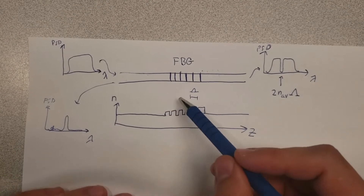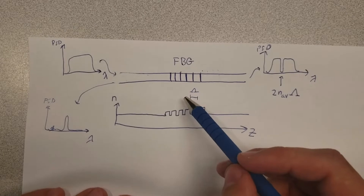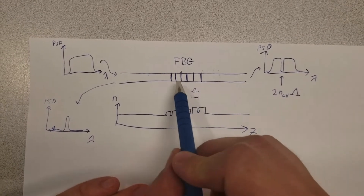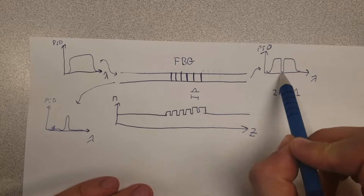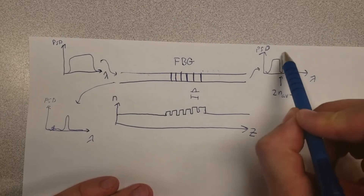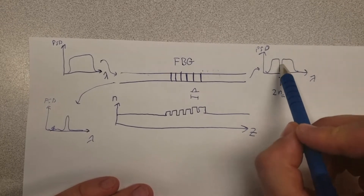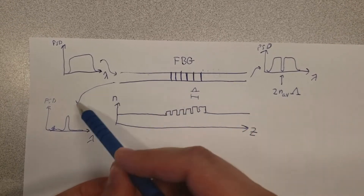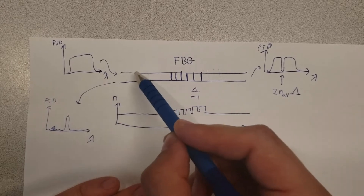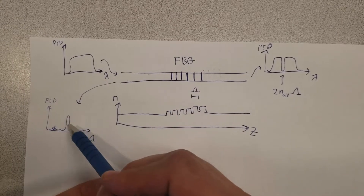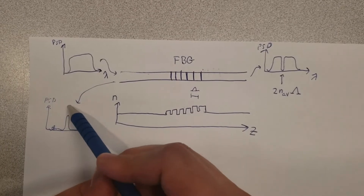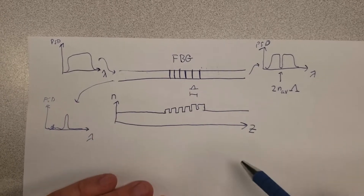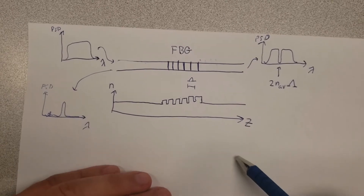You can probably already see how this would be extremely useful in telecommunications or filtering. We have a drop filter that can remove a specific wavelength or channel. Alternatively, if you use a circulator to extract the back-reflected light, then you have a filter that picks out only a certain range of wavelengths you might be interested in.